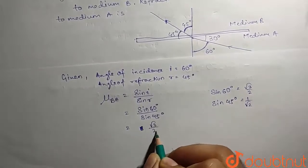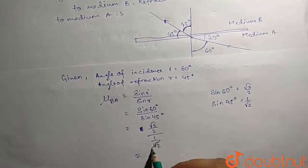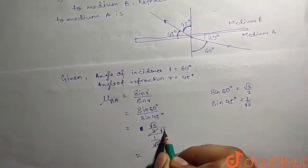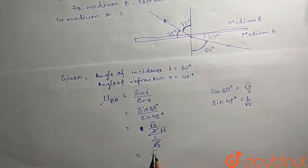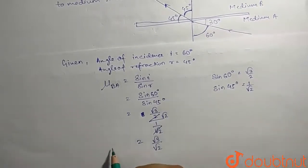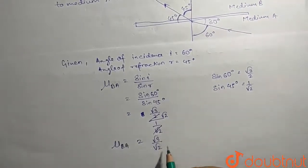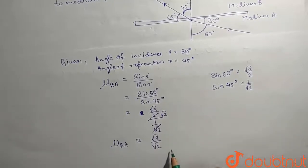Root 3 by 2 divided by 1 by root 2 equals... this will cut into root 2 and we'll get the answer as root 3 by root 2. So the refractive index μ_BA is equal to root 3 by 2.